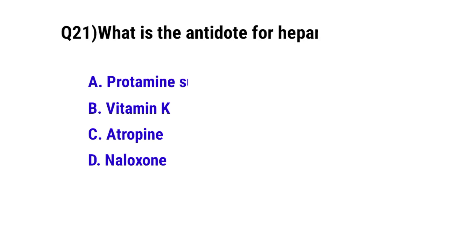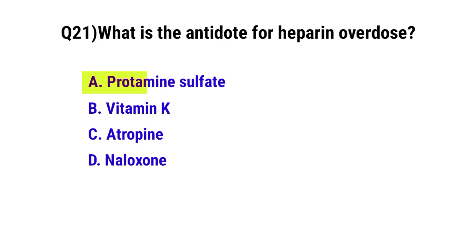Question No. 21. What is the antidote for heparin overdose? The correct option is A: Protamine sulfate.